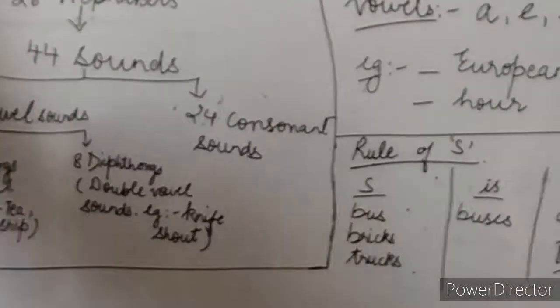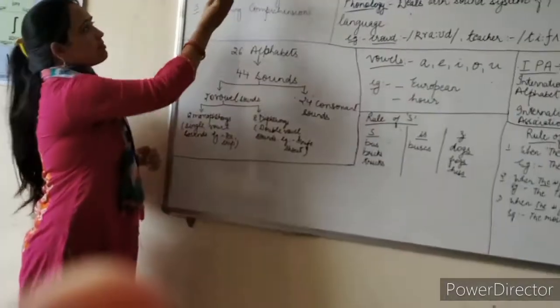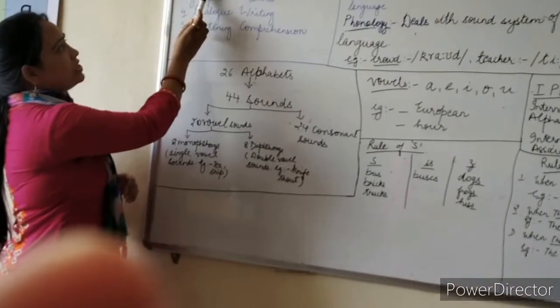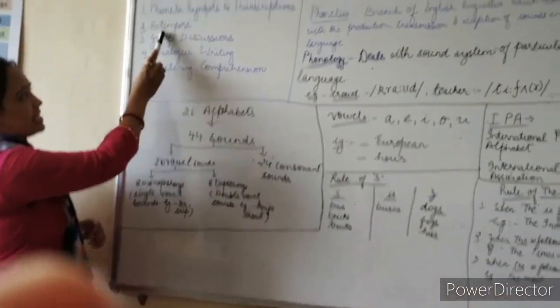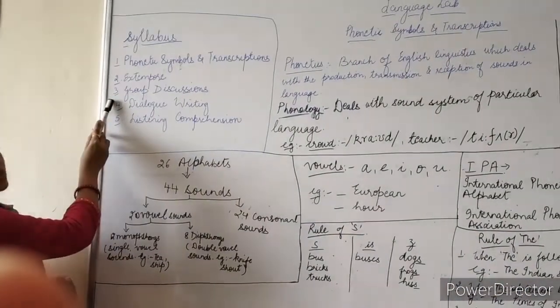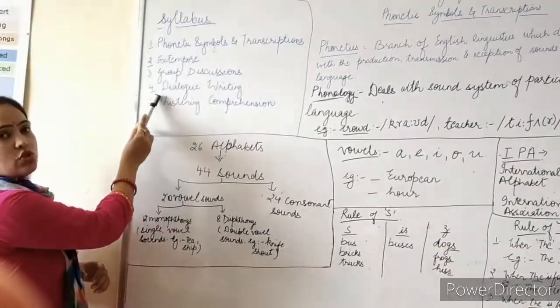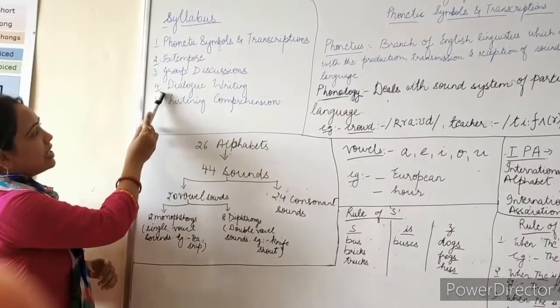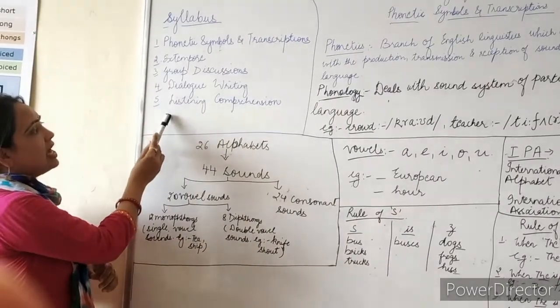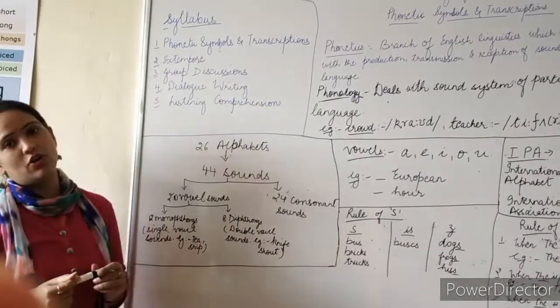The first topic is phonetic symbols and transcriptions. The second topic is extempore. The third topic is group discussion. The fourth topic is dialogue writing, and the fifth topic is listening comprehension.